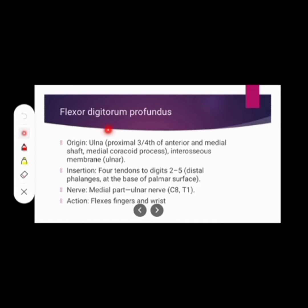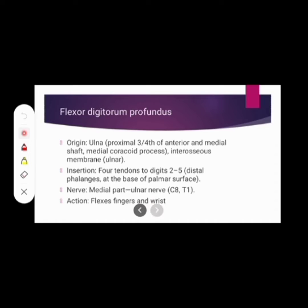The next muscle is flexor digitorum profundus. Its origin: ulnar — proximal three-fourths of anterior and medial shaft — medial coronoid process, and interosseous membrane. Insertion: four tendons to digits two to five, at the base of the palmar surface of the distal phalanges. Nerve supply: medial part — ulnar nerve. Action: involved in finger flexion and wrist flexion.